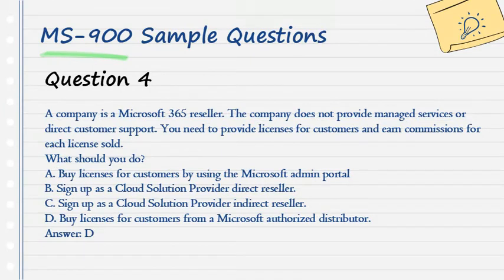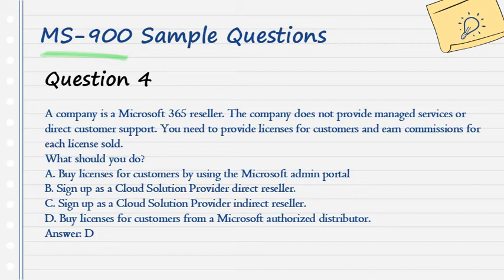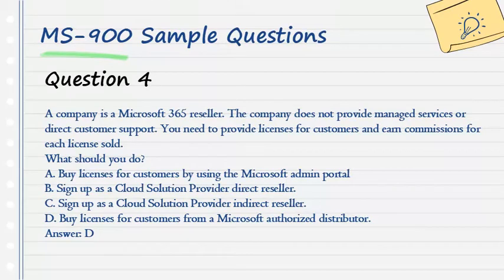Question 4. A company is a Microsoft 365 reseller. The company does not provide managed services or direct customer support. You need to provide licenses for customers and earn commissions for each license sold. What should you do? A. Buy licenses for customers by using the Microsoft Admin Portal. B. Sign up as a cloud solution provider direct reseller. C. Sign up as a cloud solution provider indirect reseller. D. Buy licenses for customers from a Microsoft authorized distributor. Answer: D.